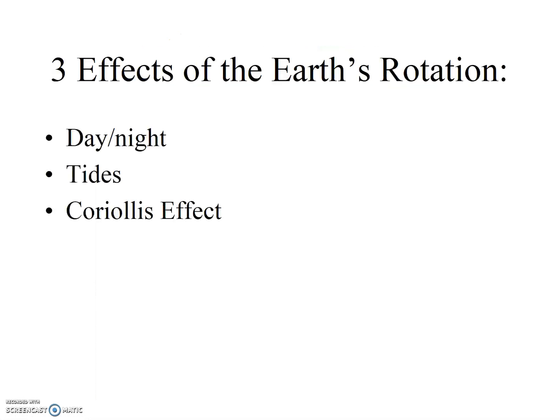Now that we have a good understanding of Earth's rotation, we can see how the rotation of the Earth on its axis impacts the Earth's system. There are three primary effects that we're going to briefly mention here.